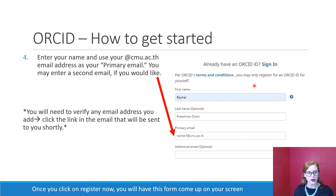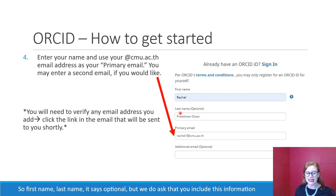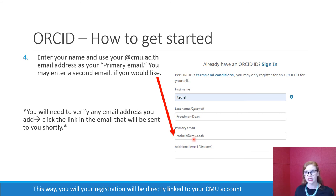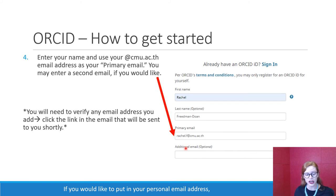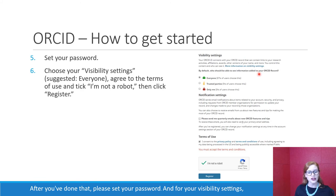Once you click Register Now, a form will come up on your screen. Enter your name, and please use your CMU email as your primary email. First name and last name — it says optional, but we do ask that you include this information for clarity purposes. Your primary email should be your CMU email address so your registration will be directly linked to your CMU account and verified. If you'd like to add your personal email, you can do that in the additional email section. Once you submit, you'll get an email and need to click the link to verify your email address. After that, please set your password.